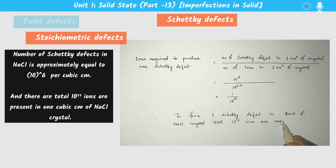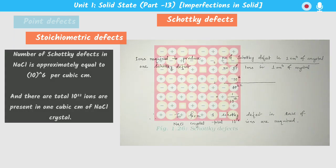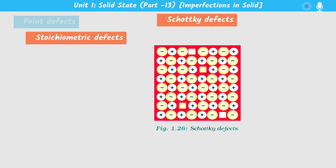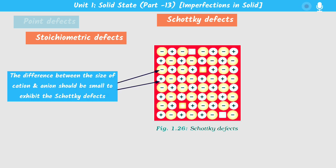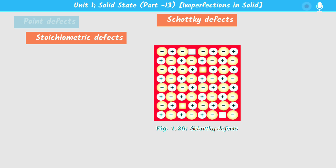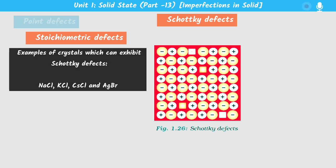So 10^16 number of ions are required to produce one Schottky defect. One more important point: an ionic solid can only exhibit Schottky defects if the difference between the sizes of the cations and anions is minimum — very small size difference. In Frenkel defects the size difference should be significant, but for Schottky defects the size difference should be minimum. Examples are sodium chloride, potassium chloride, cesium chloride, and silver bromide.